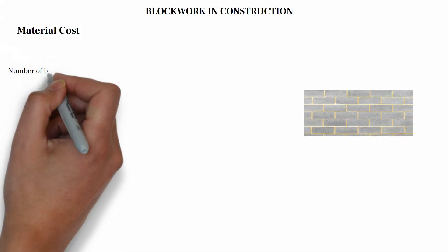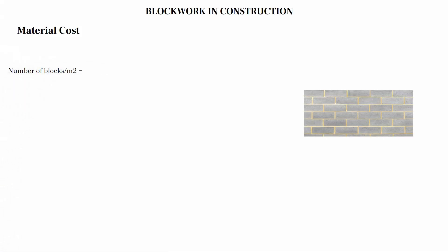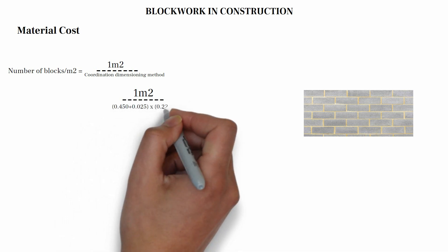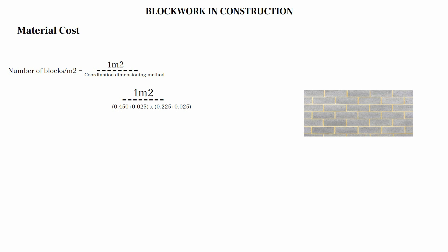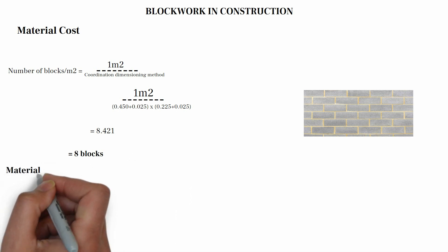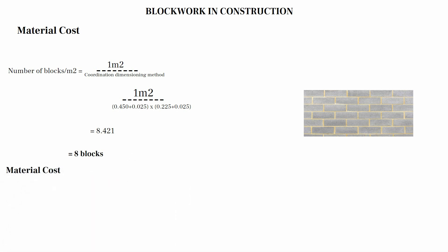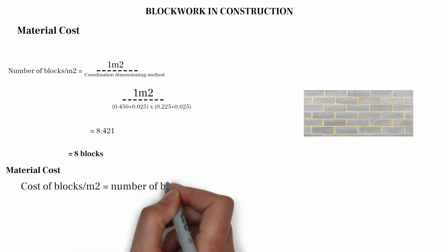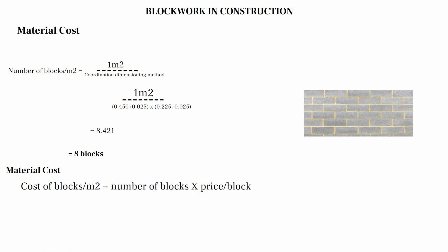Material cost: number of blocks per meter square equals 1 meter square divided by the coordination dimension of the block — that's the dimension of block plus thickness of mortar (25mm). So we have 1 divided by 0.475 multiplied by 0.250, giving 8.421, approximately 8 blocks per square meter. Cost of blocks per meter square equals number of blocks multiplied by price per block: 8 multiplied by 400 equals 3,200.